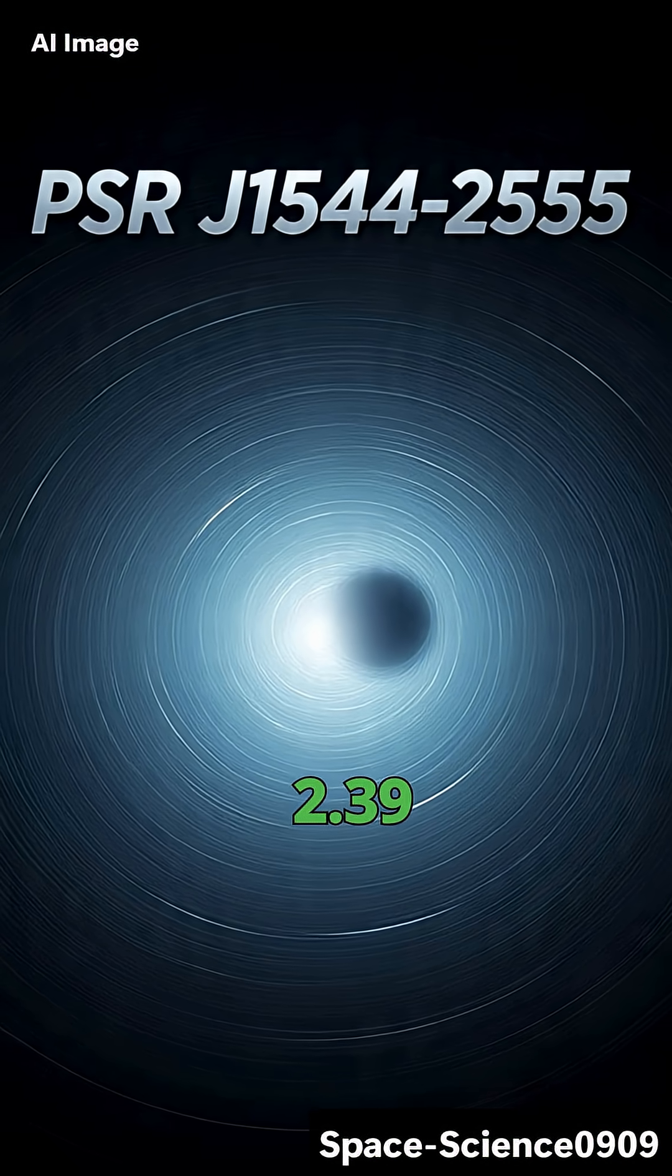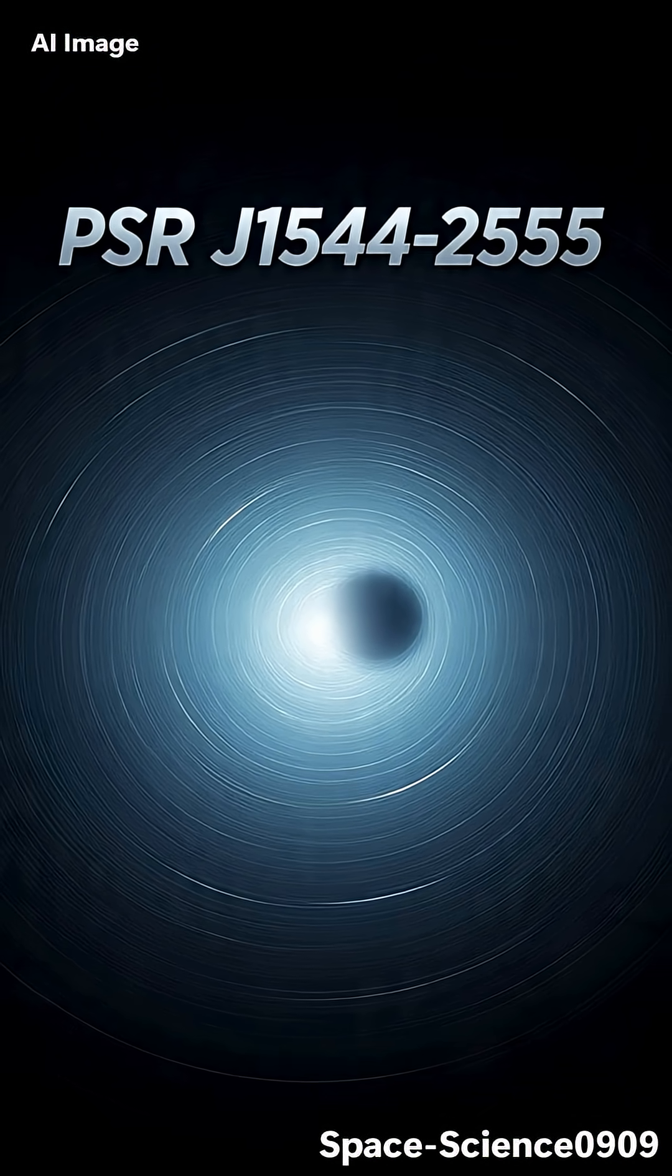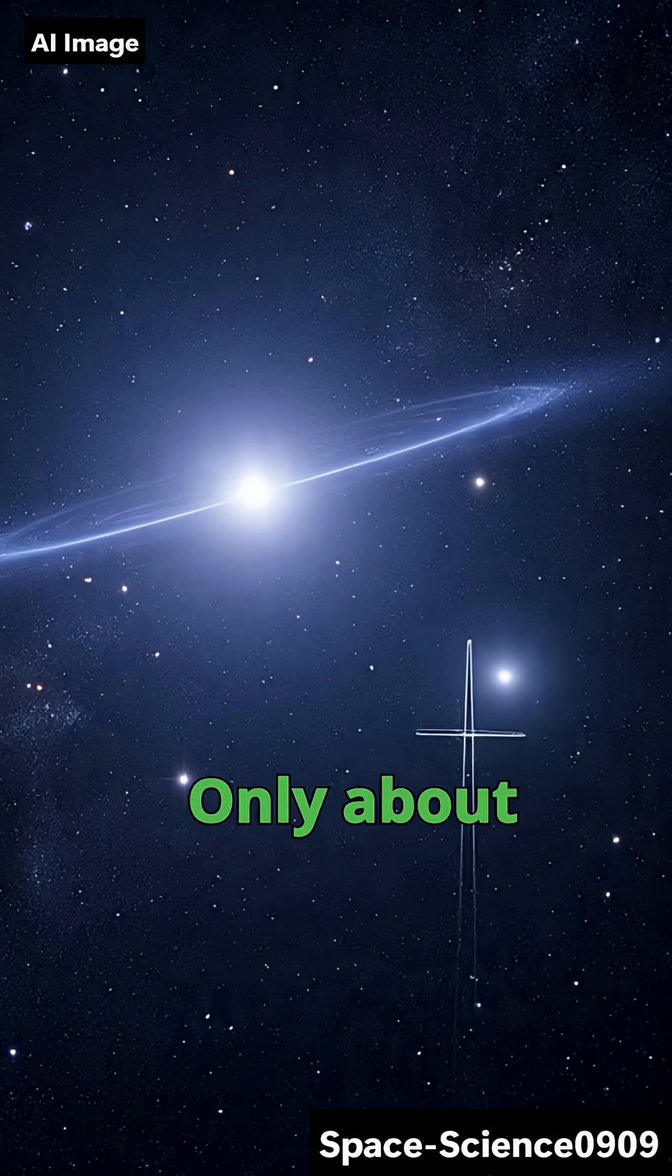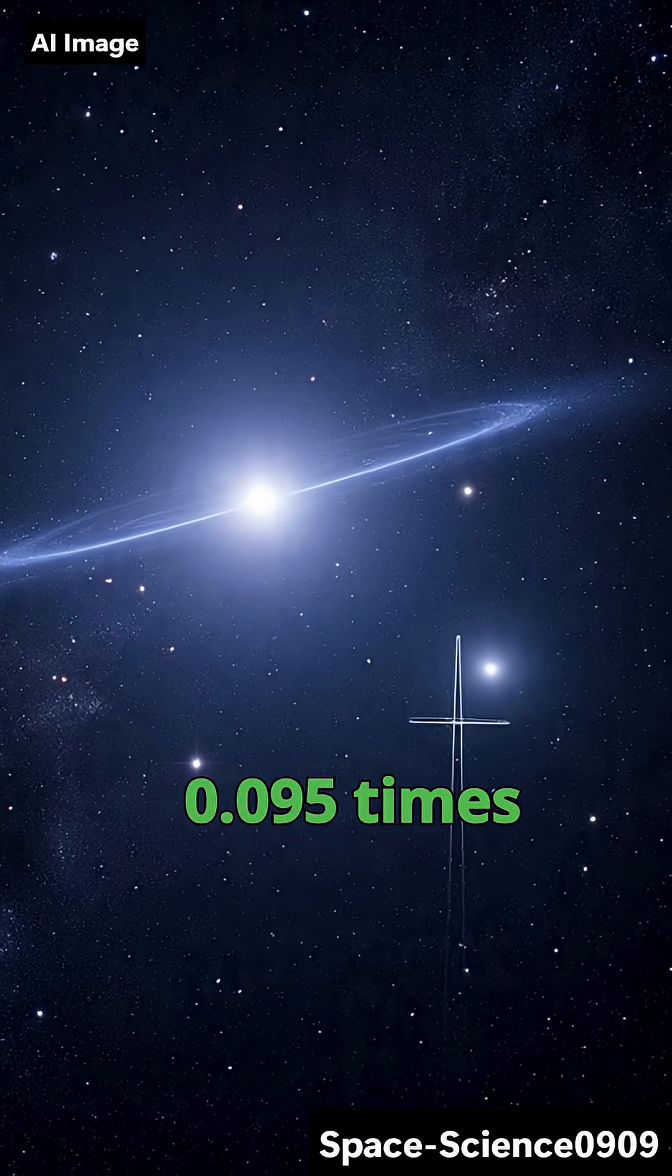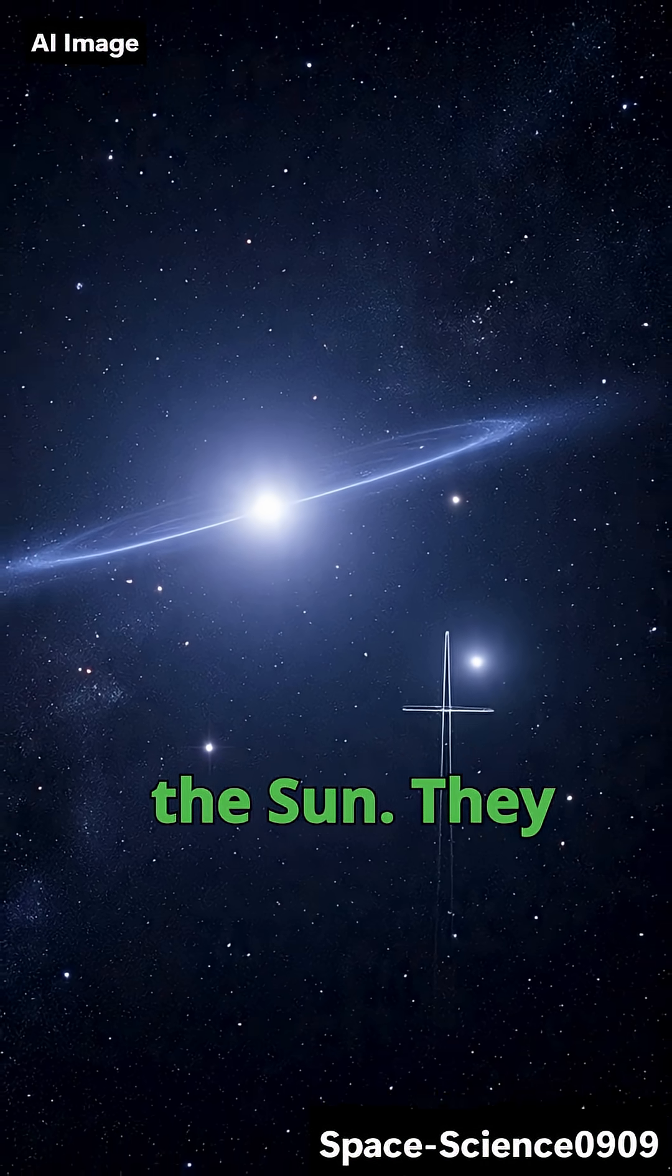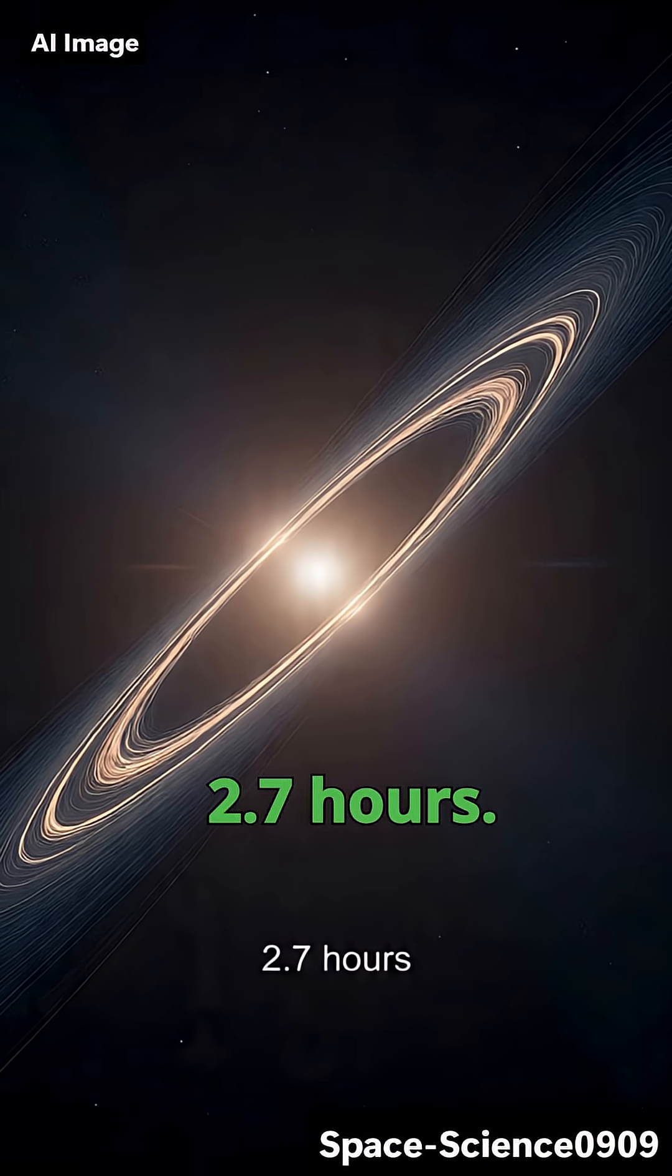PSRJ15442555 spins every 2.39 milliseconds. Its partner? Only about 0.095 times the mass of the sun. They orbit each other in just 2.7 hours.